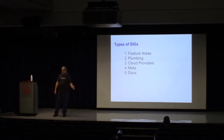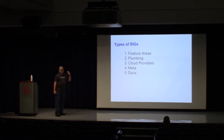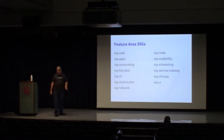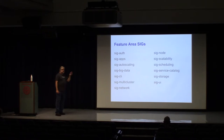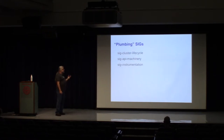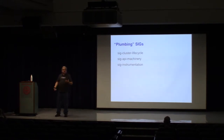If you're just getting started, you're most likely looking at one of the SIGs in the feature areas — that includes things like authentication, node (management of the individual machine), scheduling, or sig-cli if you want to improve kubectl. There are other SIGs like sig-cluster-lifecycle and sig-api-machinery and sig-instrumentation that handle a lot of the plumbing holding together the other parts of Kubernetes.